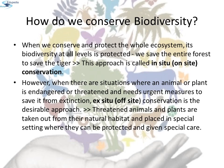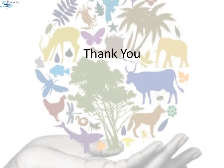How do we conserve biodiversity? When we conserve and protect the whole ecosystem, its biodiversity at all levels is protected — we save the entire forest to save the tiger. This approach is called in-situ or on-site conservation. However, when an animal or plant is endangered or threatened and needs urgent measures to save it from extinction, ex-situ or off-site conservation is the desirable approach, where threatened animals and plants are taken out from their natural habitat and placed in special settings where they can be protected and given special care. This concludes the chapter on Biodiversity and its Conservation; the next chapter will cover environmental issues.